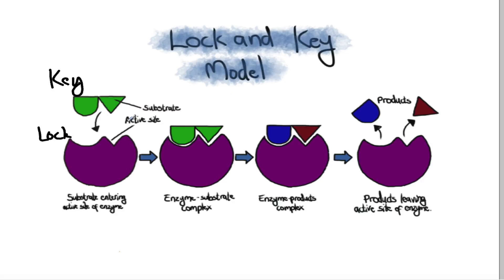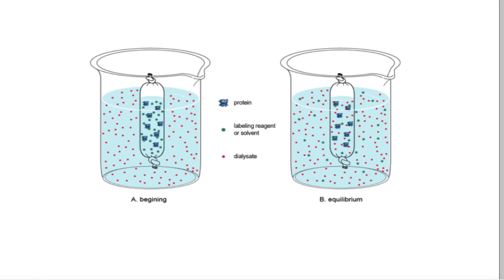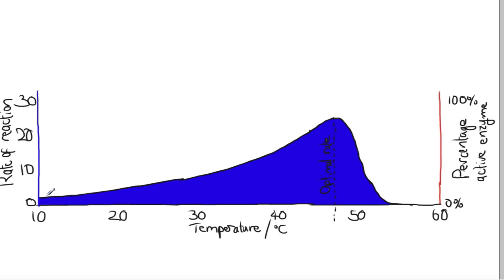Now straight away you can probably guess what effect temperature would have on this. So thinking about your kinetic theory, if we were to have an enzyme reacting with a substrate at quite a low temperature, it's going to be reacting at a certain rate. But as I increase the temperature, because the particles start whizzing around more quickly, then there's going to be more collisions and more collisions with the right amount of energy for the reaction to take place.